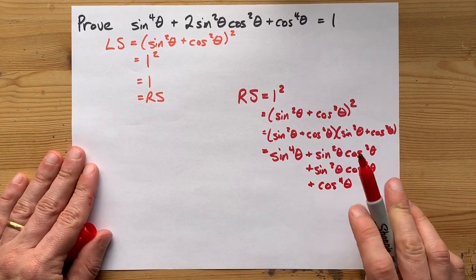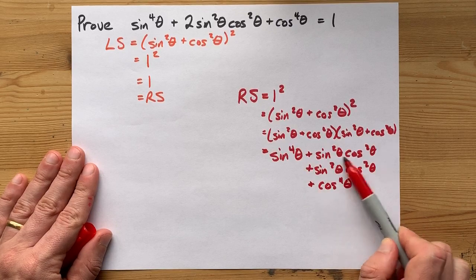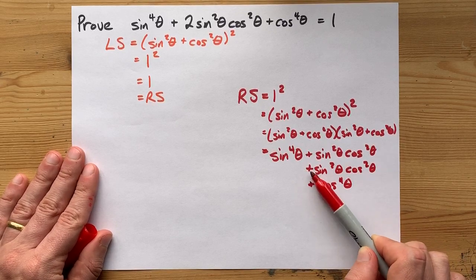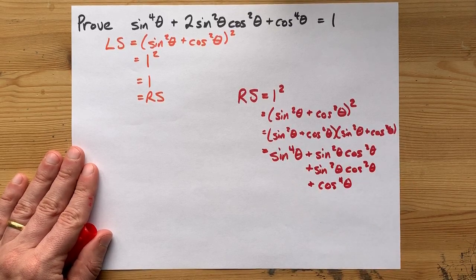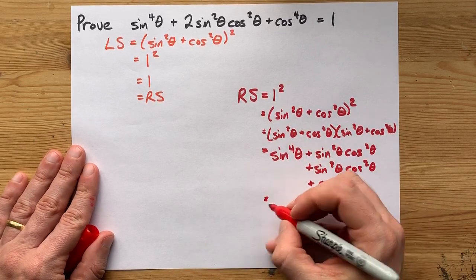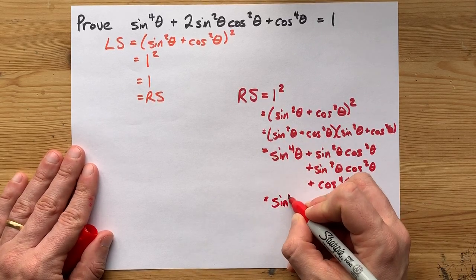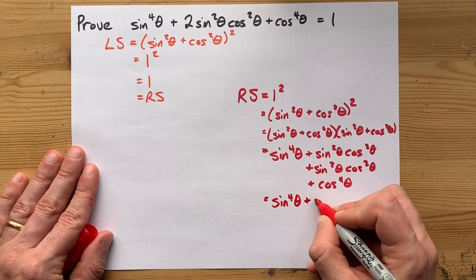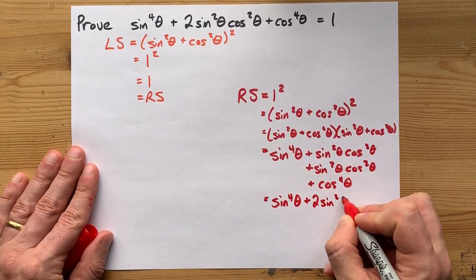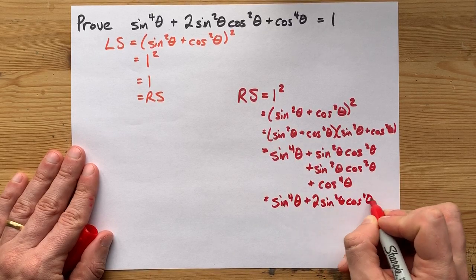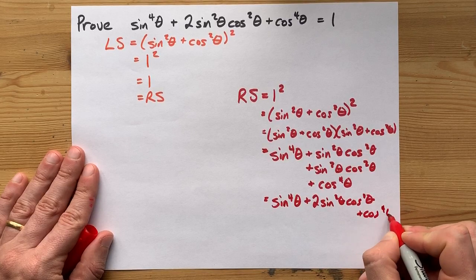Now the only other thing to do here is to note that we have 1 sin²θcos²θ, and we're adding another 1 sin²θcos²θ. That's what lets this fall out to become sin^4θ + 2sin²θcos²θ + cos^4θ.